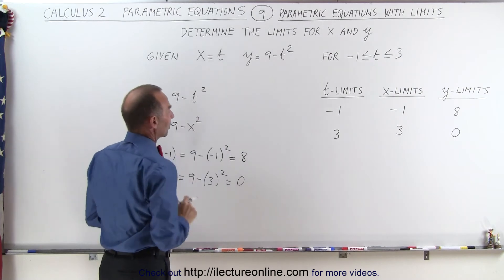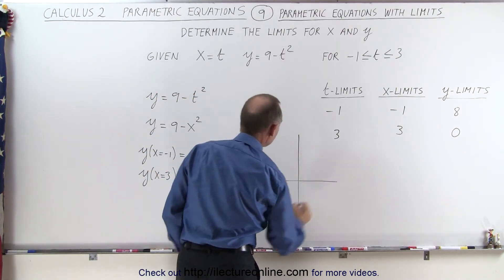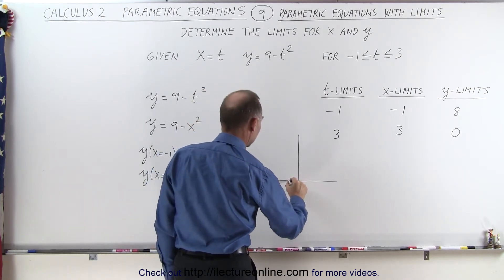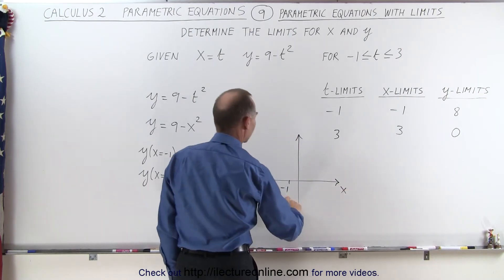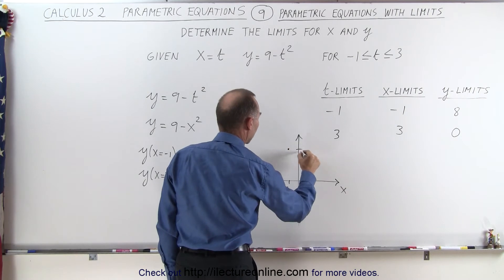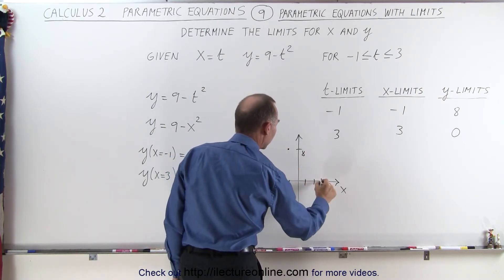Let's go ahead and graph this particular function. So this is our y, this is our x-axis. When x equals negative 1, y is equal to 8. And when x is equal to positive 3, then y is equal to 0.